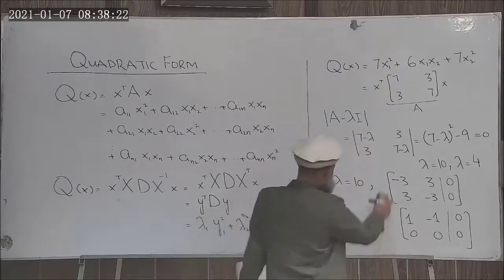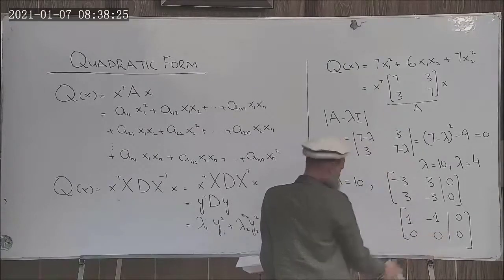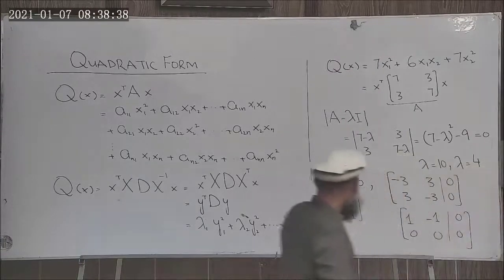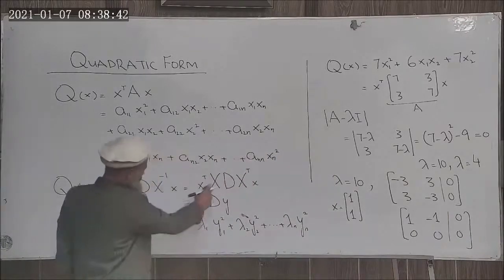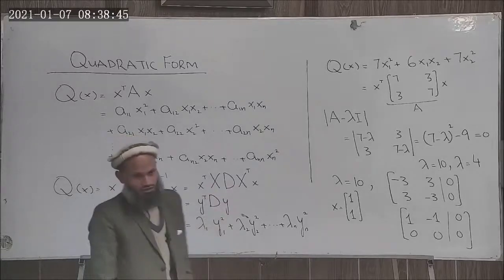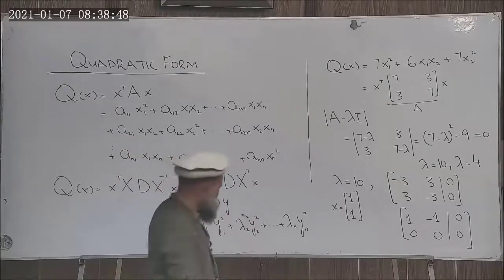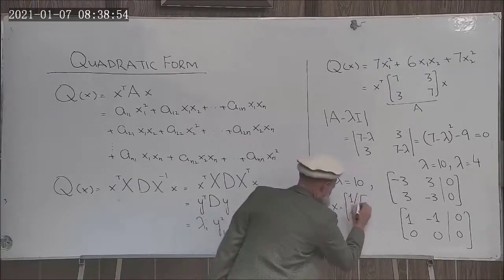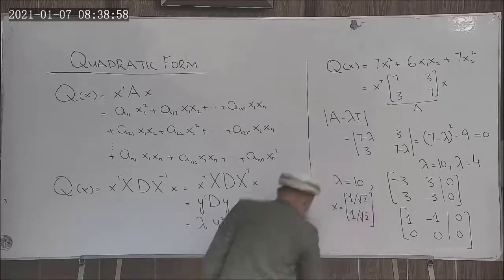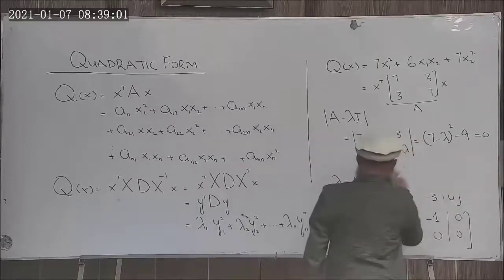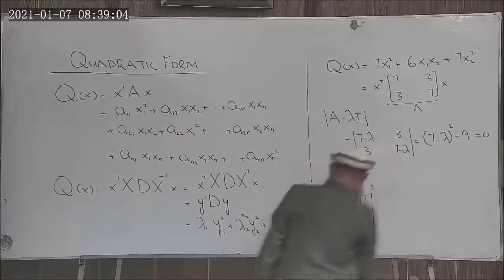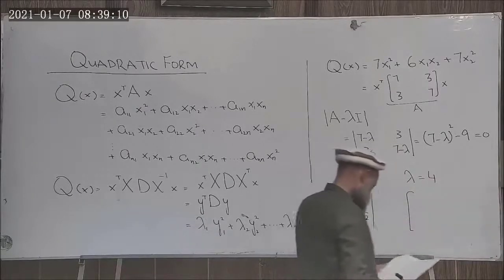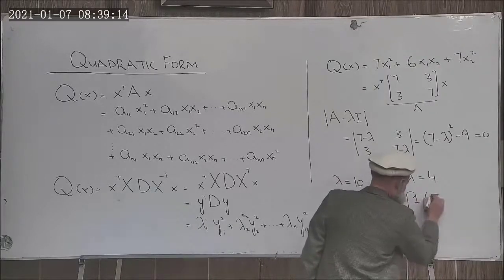From here the eigenvector can be easily determined which is [1, 1]. The eigenvector corresponding to this eigenvalue is this, that is x1 is equal to x2. Since we will be interested in this orthogonal matrix, we would prefer to have a normalized eigenvector. So simply we divide this by the magnitude of this vector, so 1 over square root of 2 and 1 over square root of 2. Similarly corresponding to second eigenvalue we determine the eigenvector.